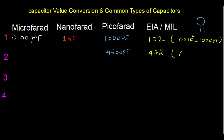The code 472 means 47 × 10² = 4700 picofarad. The third digit is always the multiplier. Now to convert 4700 pF to nanofarad, divide by 1000: you get 4.7 nanofarad. To convert 4.7 nanofarad to microfarad, divide by 1000 again: you get 0.0047 microfarad.